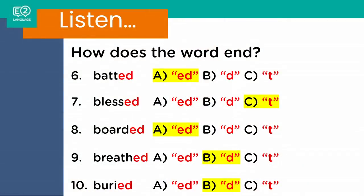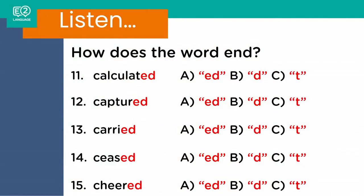Let's do five more, and then I want you to put your score into the comments below — it's just interesting to see how good your listening skills are. Let's do eleven to fifteen. Number eleven: calculated. Number twelve: captured. Number thirteen: carried. Number fourteen: ceased. Number fifteen: cheered.